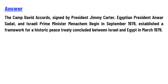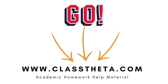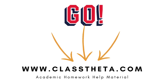The Camp David Accords were signed by President Jimmy Carter, Egyptian President Anwar Sadat, and Israeli Prime Minister Menachem Begin in September 1978. They established a framework for a historic peace treaty concluded between Israel and Egypt in March 1979.